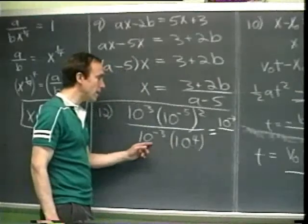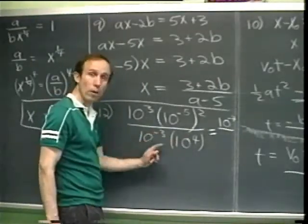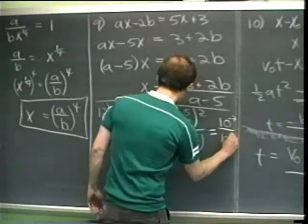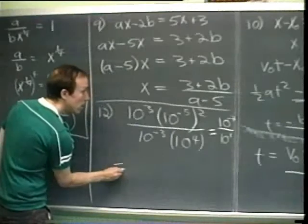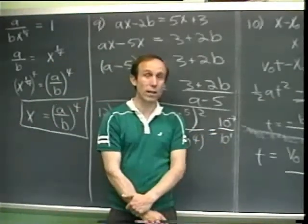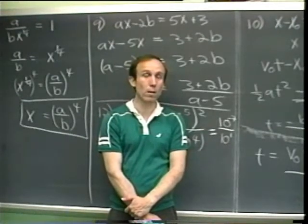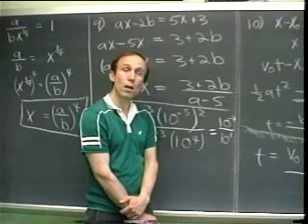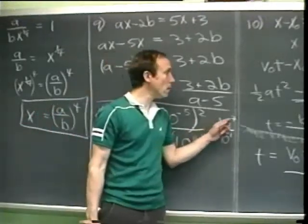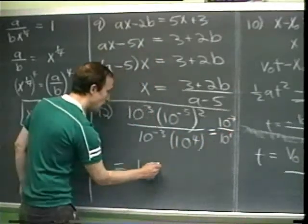When dividing a quantity raised to a power by that same quantity raised to another power, subtract the powers. So it's 10 to the (minus 7 minus 1), which gives 10 to the minus 8.